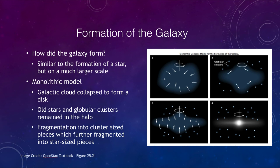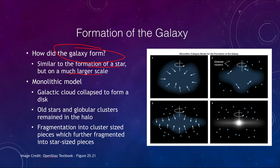How did the galaxy form in the first place? Is it similar to the formation of a star but on a much larger scale? That is one way of thinking about it. We call this the monolithic model, where the galactic cloud is collapsing in to form a disk, as seen in figure one.